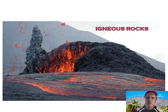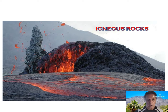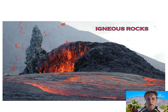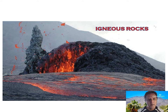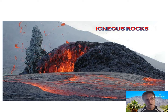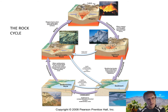Okay, earth science students, continuing my series of PowerPoints, I am Brian Miller Hicks. We're going to talk about igneous rocks. Igneous comes from, I believe, a Greek or Latin word 'ignis' which means fire, and that's well named because rocks of the igneous type are those that form from originally molten rock — originally formed from magma which cools underneath the Earth's surface, or lava which cools above the Earth's surface.